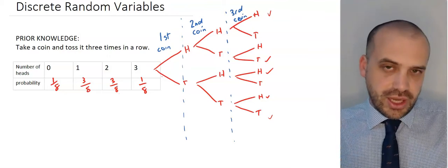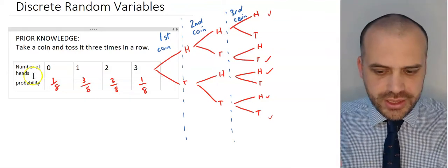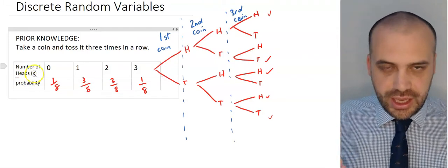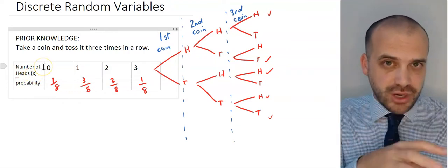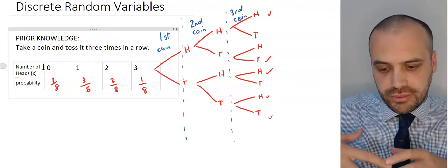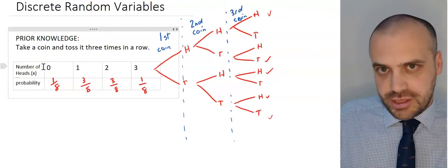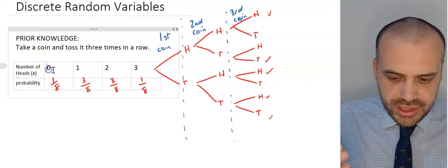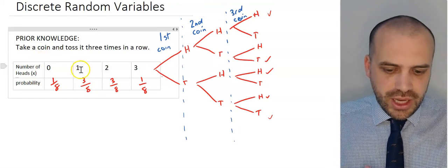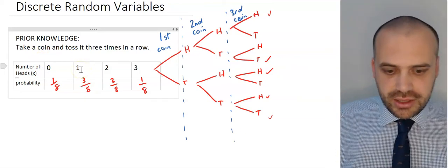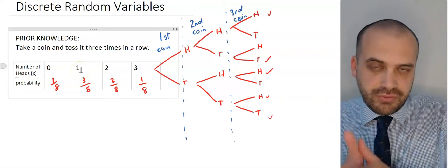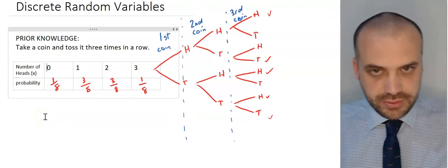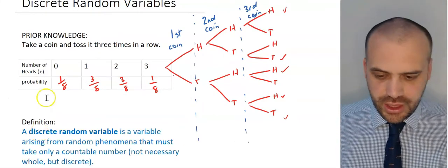You have just done a discrete random variable question. In this case, the random variable was the number of heads — we'll call that X. That's a random variable: a variable that arises from some form of chance, some random occurrence. Why the word 'discrete'? It's because these values must take discrete values. You can't get half of a head or three quarters of a head. You have to have discrete, countable values.